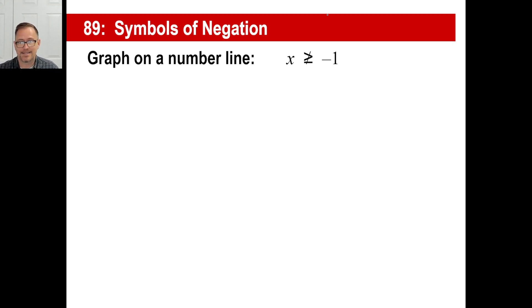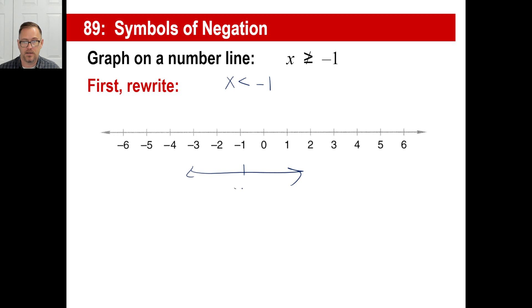X is not greater than or equal to negative one, which means we're going to first rewrite that, which means it's going to be X is less than negative one. Now your number line is going to look like this. Don't make it too complicated. Just go like this and then negative one. You don't have to make this perfect. Just make it as fast as you can. X is less than negative one. It means you don't include negative one. So you just go like that. That's what your drawing is going to look like.